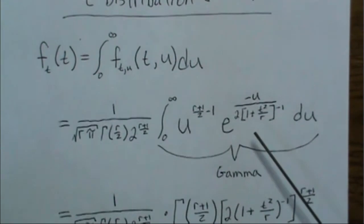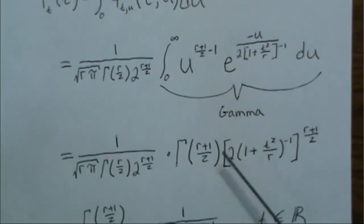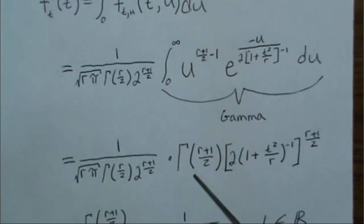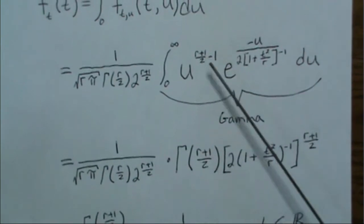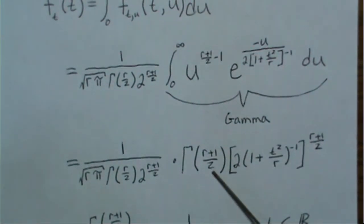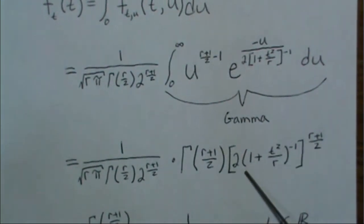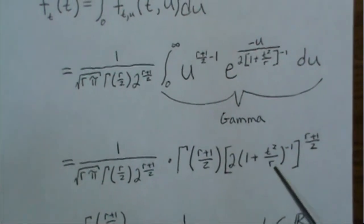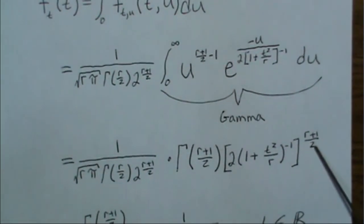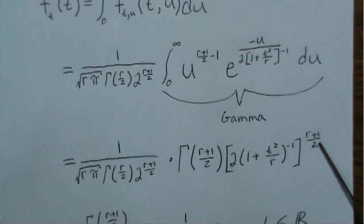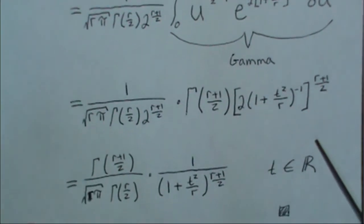Well, this is a gamma distribution, so they would call this alpha, and then this denominator here, beta. So it's a gamma, alpha, beta. And we know how that integrates. This integrates to gamma of alpha, which was r plus 1 over 2, and the beta was in the denominator up here, raised to the alpha power, r plus 1 over 2.